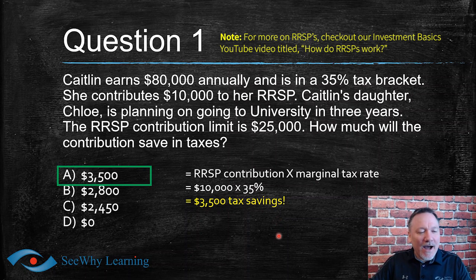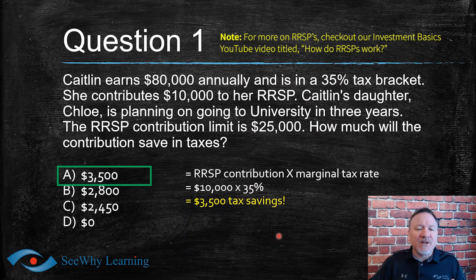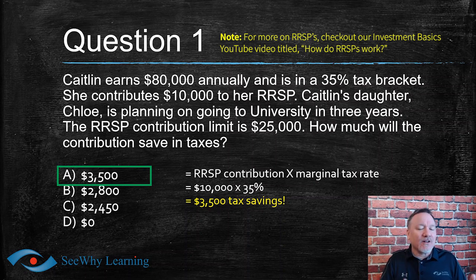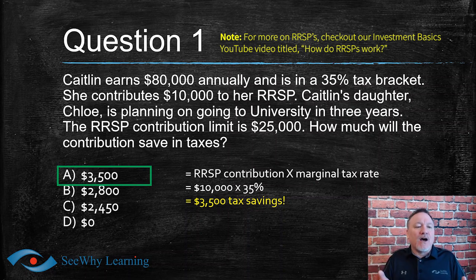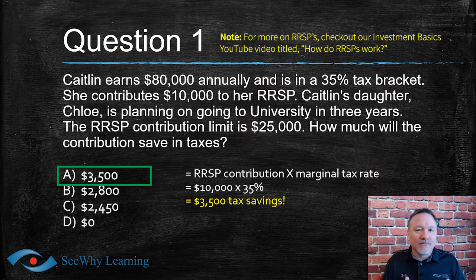Students doing these kinds of questions very often make mistakes by reading the scenario first rather than the question. Because the scenario has so many distractors, it tricks students into answering the wrong question. For example, many students see the RSP contribution limit and start calculating maximum contribution amounts — 18% of earned income and similar — instead of focusing on what was actually asked. Always focus on what the question is asking and it will guide you down the right path.